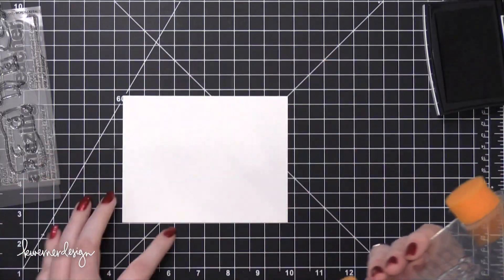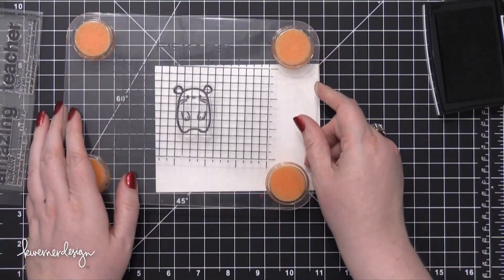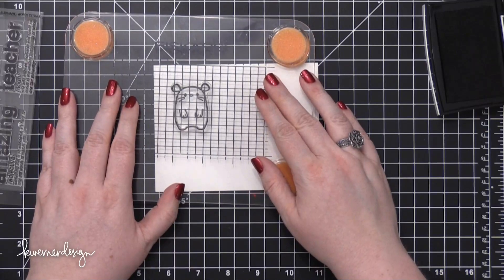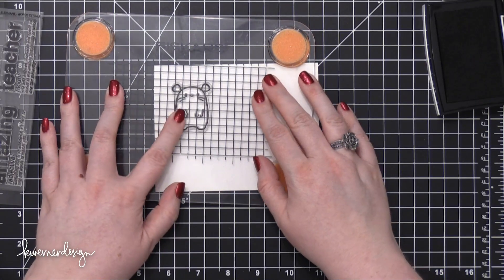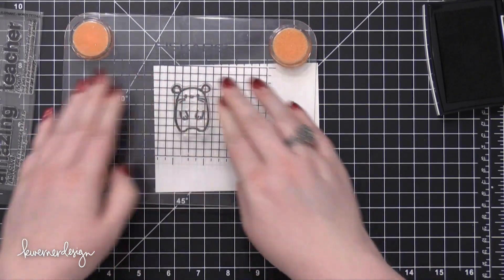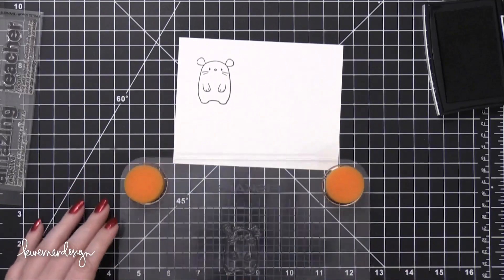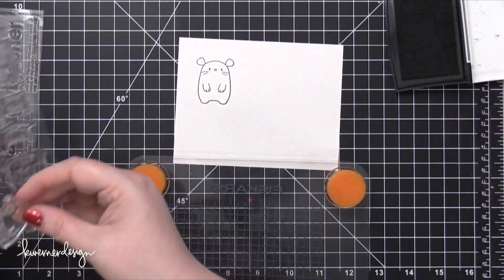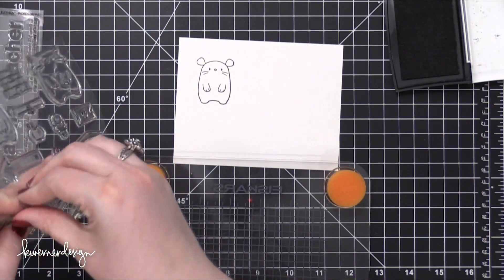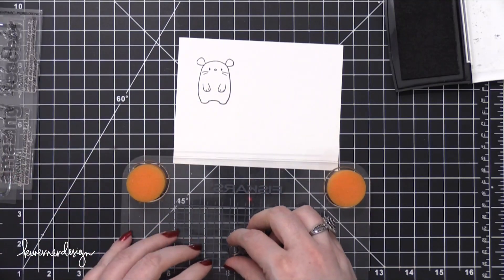So I'm starting out by stamping the small mouse from the Page Huggers stamp set near the top edge of this cardstock in some VersaFine ink. I'm using Bristol paper because I'm going to be using Zig Clean Color Real Brush markers.